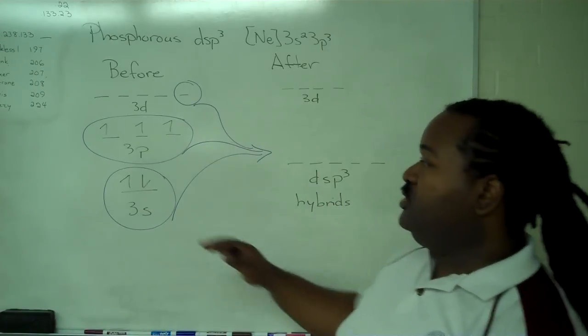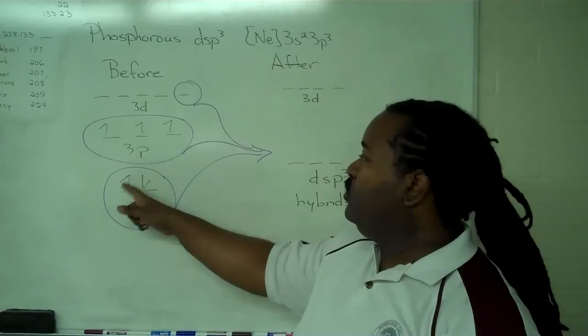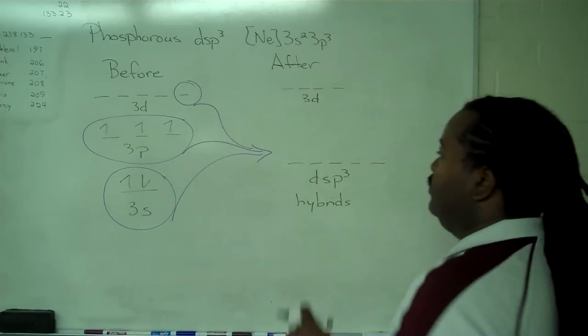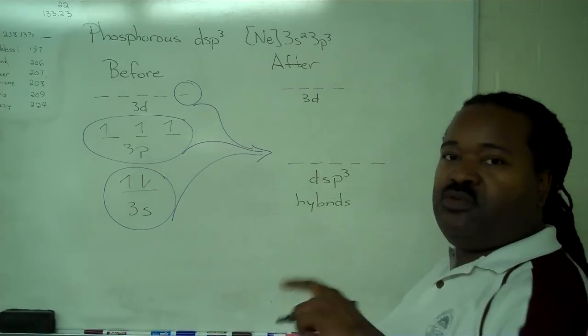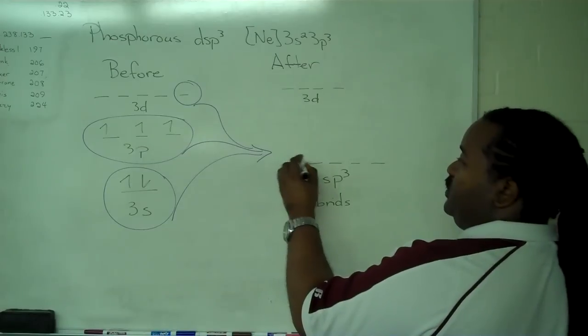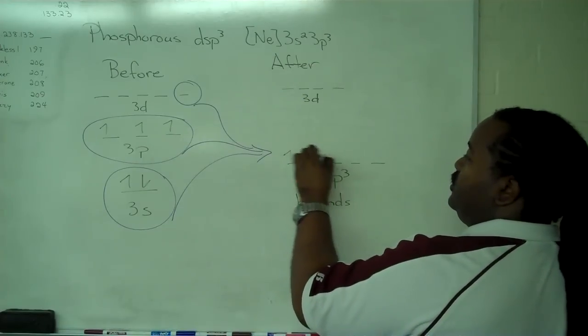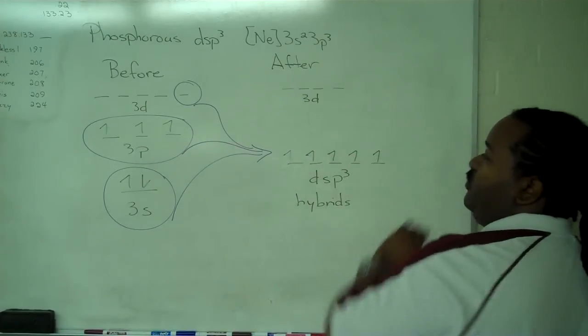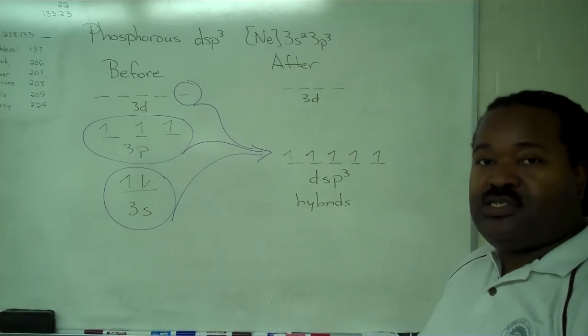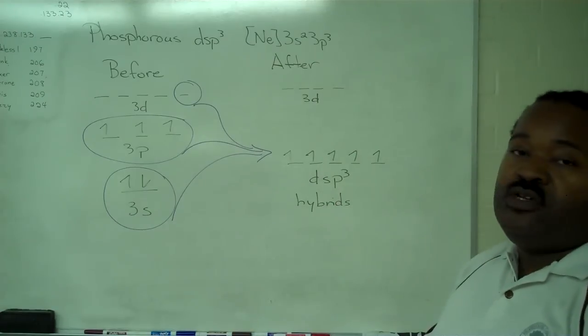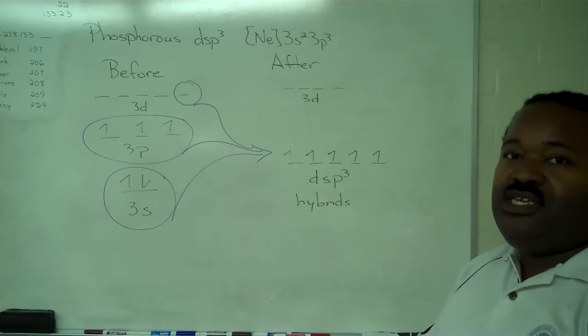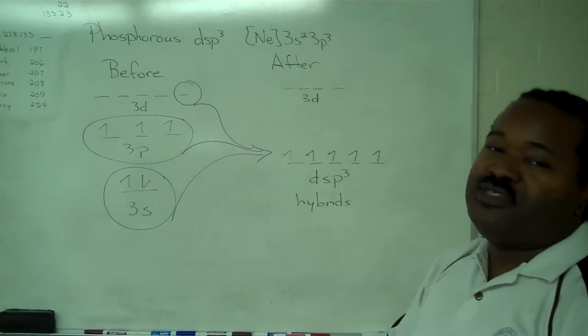In order to fill this in, we need to count up our electrons - we have five total. All of these are equal energy, so we have to spin everything up before we can spin anything down. And this completes the after picture for our dsp³ hybridization of phosphorus.